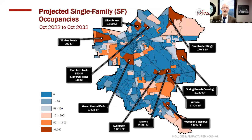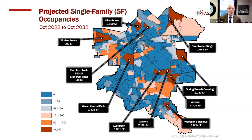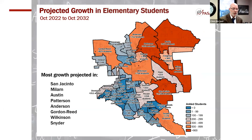This gives you an idea of what subdivisions are contributing to it. SF stands for single family occupancies — you can see Silverthorne in the Anderson zone, Pine Acre Trails and Signorelli (now called Cielo) in the Patterson zone, Sweetwater Ridge in the Austin zone, and Spring Branch Crossing in the Milam zone. Down along the 242 corridor, you have some massive subdivisions coming: Artavia with 3,300 homes, Mavera, and Evergreen. These are things we look at each Thursday while we work on zoning.